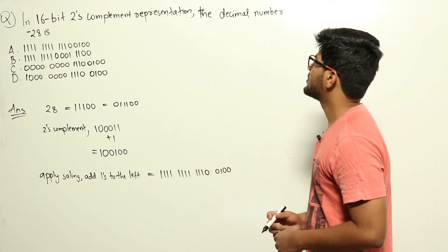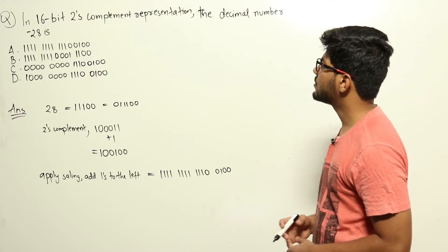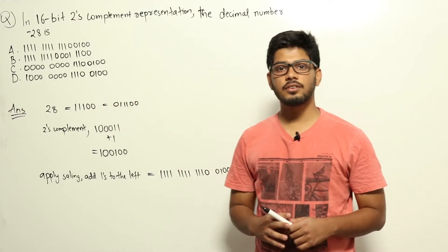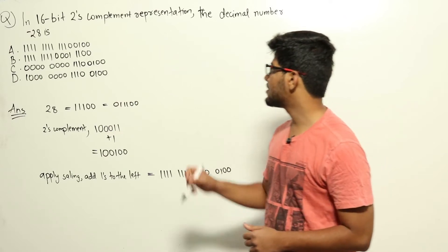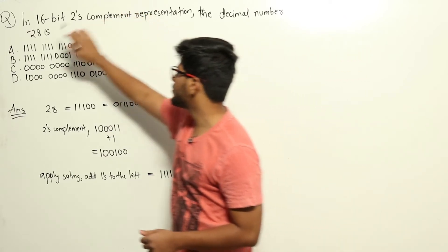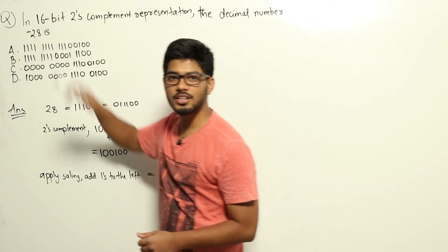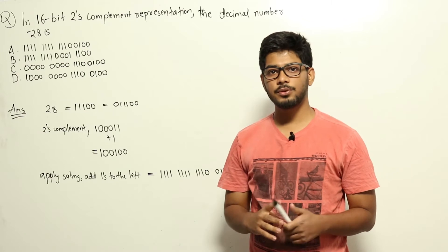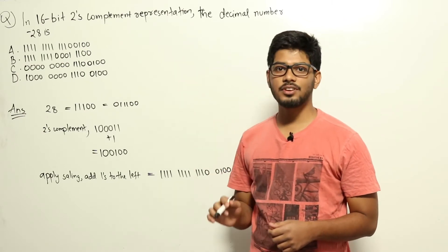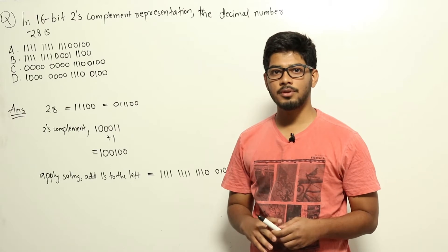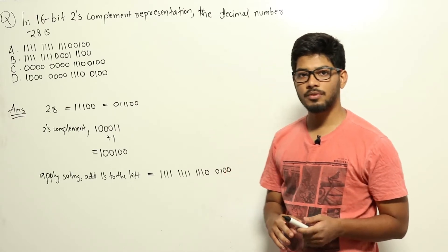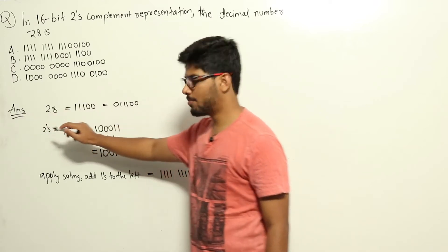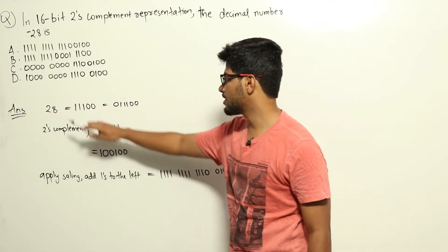In 16-bit 2's complement representation, the decimal number minus 28 — four options are given. This question comes from number systems: find the 2's complement representation of minus 28 using 16 bits. To do this, we take the binary representation of plus 28 and then take the 2's complement of that to get the 2's complement form of minus 28. The binary form of plus 28 is 11100.